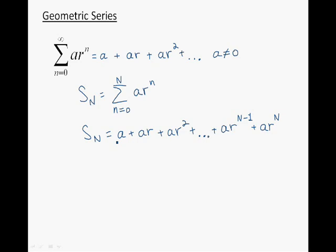The first step is to multiply Sn by R. When I multiply this expression by R, the first term becomes Ar, the second term Ar squared, the third term Ar cubed. Essentially I'm adding 1 to the power of R. So Ar to the power n-1 becomes Ar to the power n, and Ar to the power n becomes Ar to the power n plus 1.